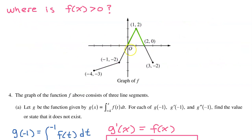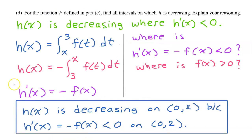Looking at the graph of f, we can easily see that the portion above zero — the green part of the graph — is greater than 0 between 0 and 2. In summary, h of x is decreasing on the interval from 0 to 2 because h prime of x, which equals negative f of x, is less than 0 on the interval from 0 to 2.